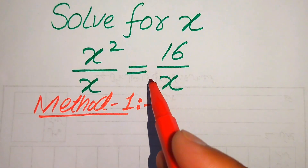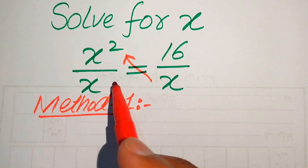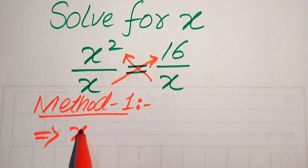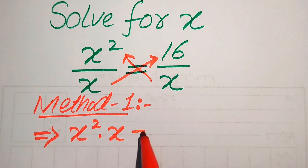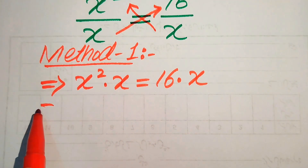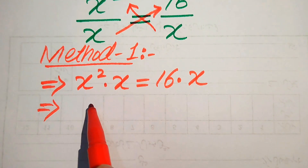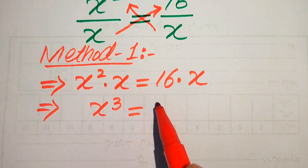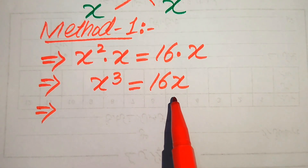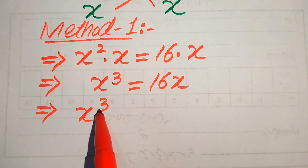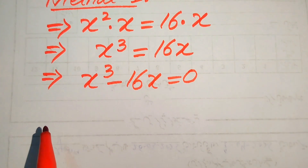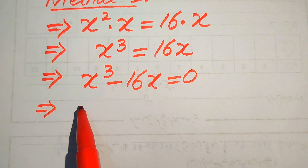In the first method, we cross multiply the terms — we multiply this x on this value and this x on 16. After cross multiplication, it becomes x squared times x equals 16 times x, which simplifies to x cubed equals 16x. We then move 16x to the left-hand side to get x cubed minus 16x equals 0.